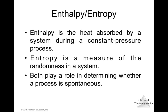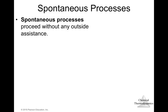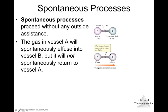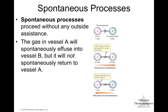Both enthalpy and entropy play a role in determining whether a process is spontaneous. Spontaneous processes proceed without any outside assistance. For example, gas in vessel A will spontaneously effuse into vessel B when the stopcock is opened, but it will not spontaneously return to vessel A. It is spontaneous to fill all the available volume, but not possible to go back and be trapped in vessel A — that is not a spontaneous process.